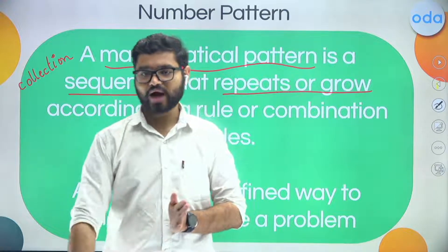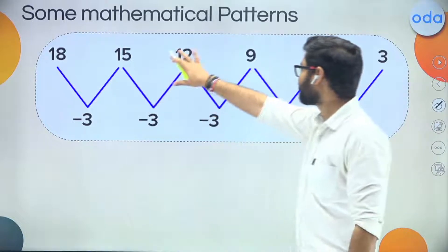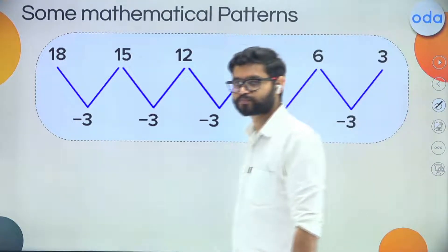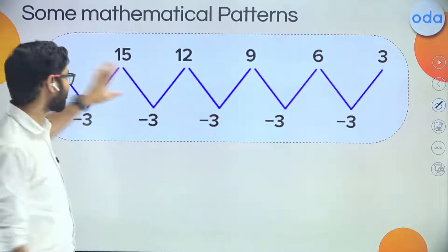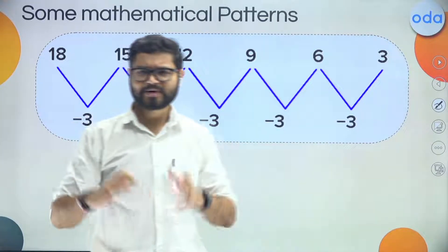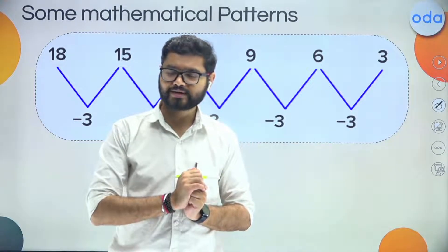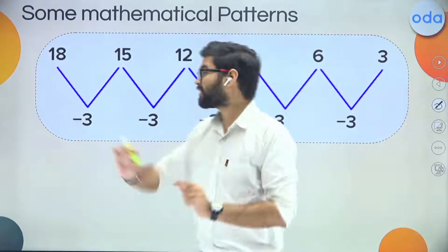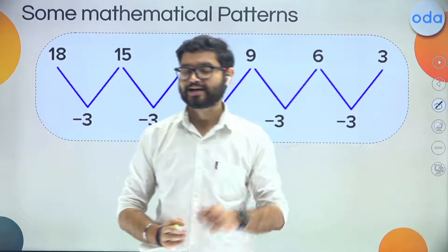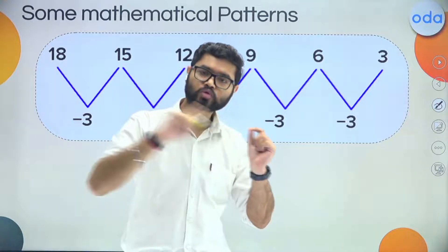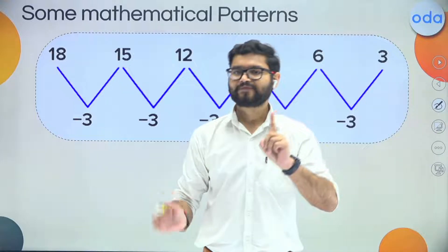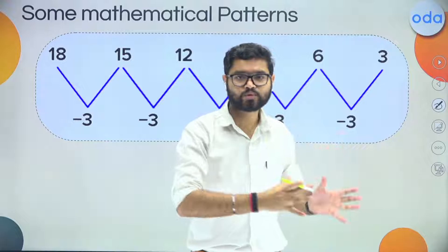Let's consider a few examples. Here we have the numbers: 18, 15, 12, 9, 6, 3. Do you think these are random numbers? No — all these numbers have a logic, a rule behind them. In these kinds of questions, we simply have to identify that rule and use the same rule to solve the question. You can see that every time we are subtracting number 3 to get the next number. The rule is minus 3.